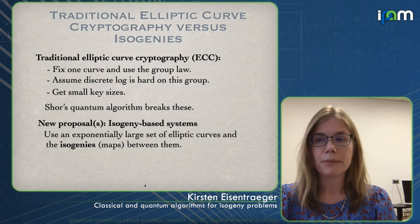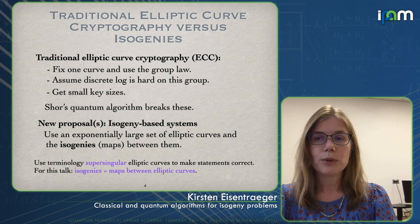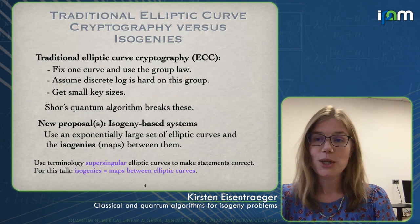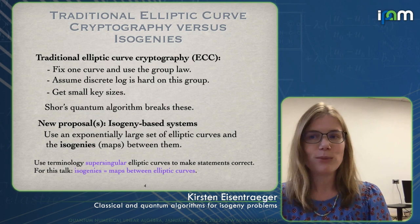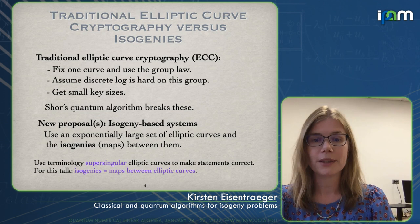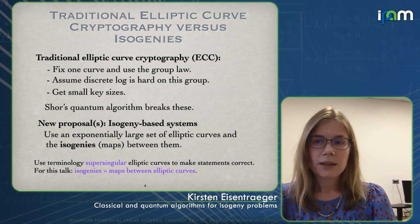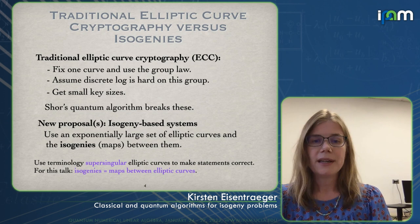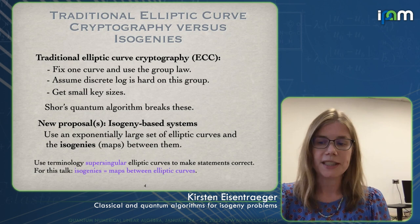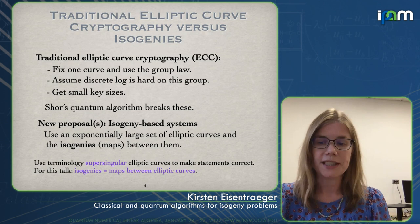Throughout my talk I'm going to use the terminology 'supersingular' to make sure the statements I'm making are correct, but the actual notion of what it means for an elliptic curve to be supersingular won't be needed until the very end. For now, it's fine to just think about elliptic curves. And when I say 'isogeny,' it's fine to think of them as maps between elliptic curves — they preserve the group structure. So we have curves with an extra property called supersingular, and maps between them called isogenies.